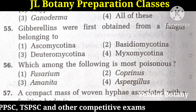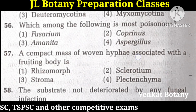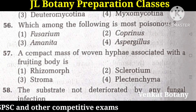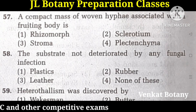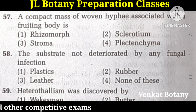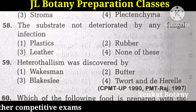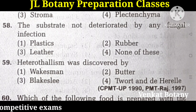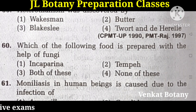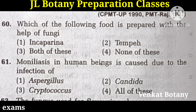Rotting of food is caused by all of these: Polyporus, Fomes, and Ganoderma. Gibberellins were first obtained from a fungus belonging to Ascomycotina. Which among the following is most poisonous? Amanita — the third option. A compact mass of woven hyphae associated with a fruiting body is Stroma. Heterothalism was discovered by Blakeslee. Which of the following food is prepared with the help of fungi? Both of these: Idli, Caparina, and Tempeh. Moniliasis in human beings is caused due to infection of Candida. The fungus used for flowering seeds is Penicillium roqueforti.